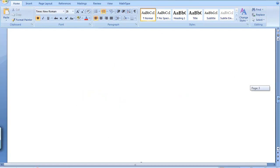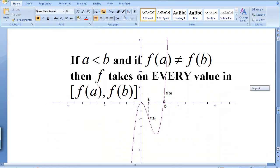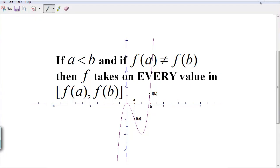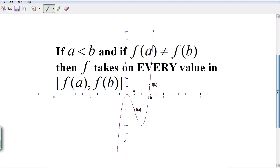So here's the theorem. The theorem is saying that if a is less than b and f(a) is not equal to f(b), then f takes on every value between the values of f(a) and f(b), and remember f(a) and f(b) are the y values. So what does this theorem really tell you? Something very important.